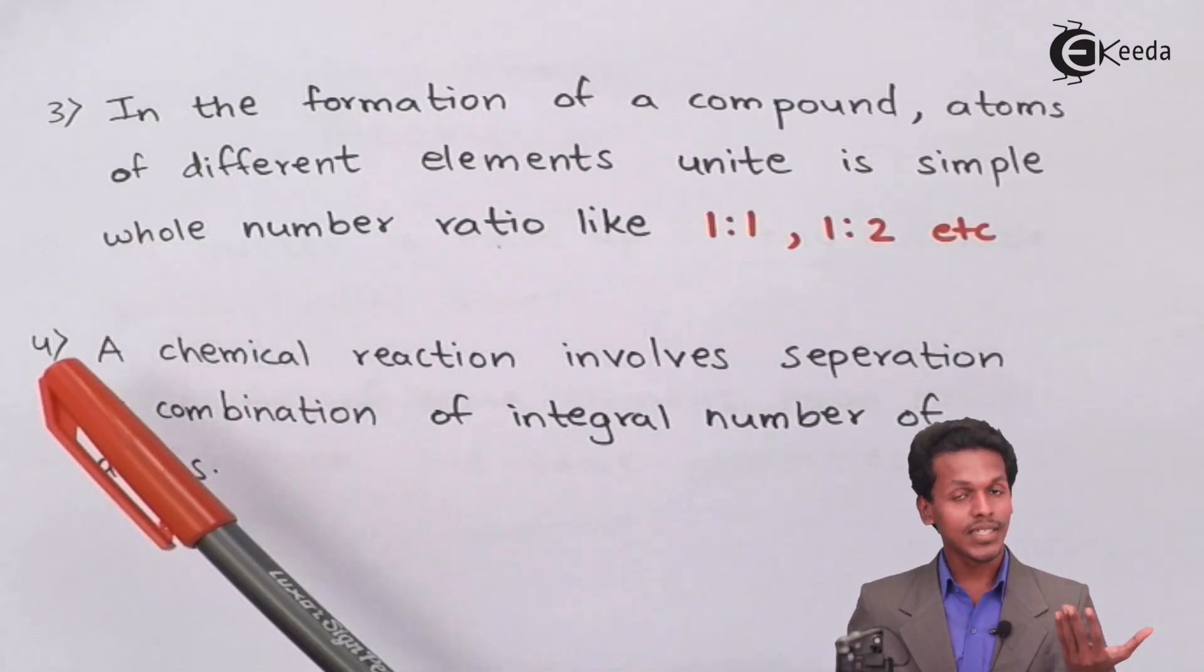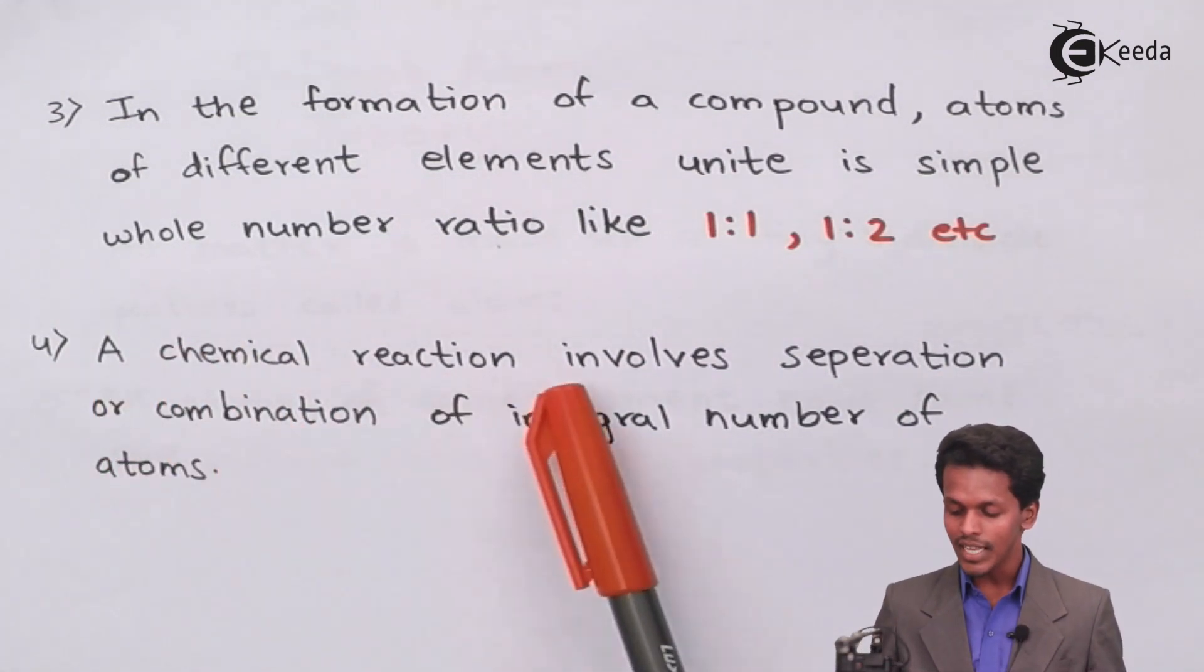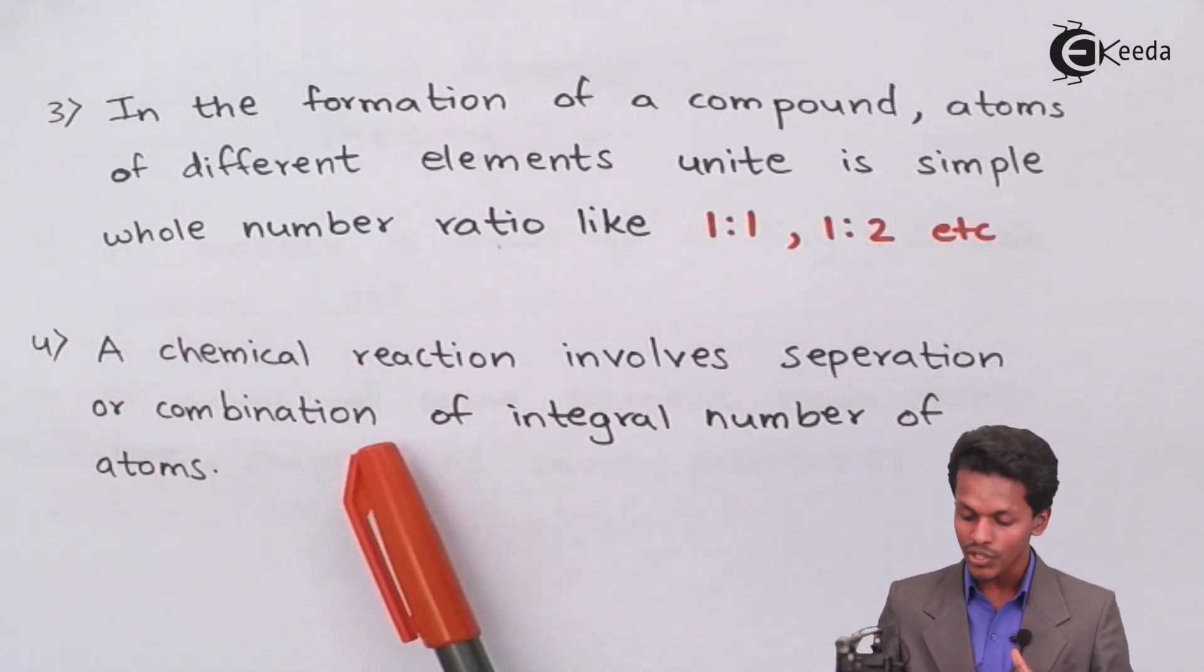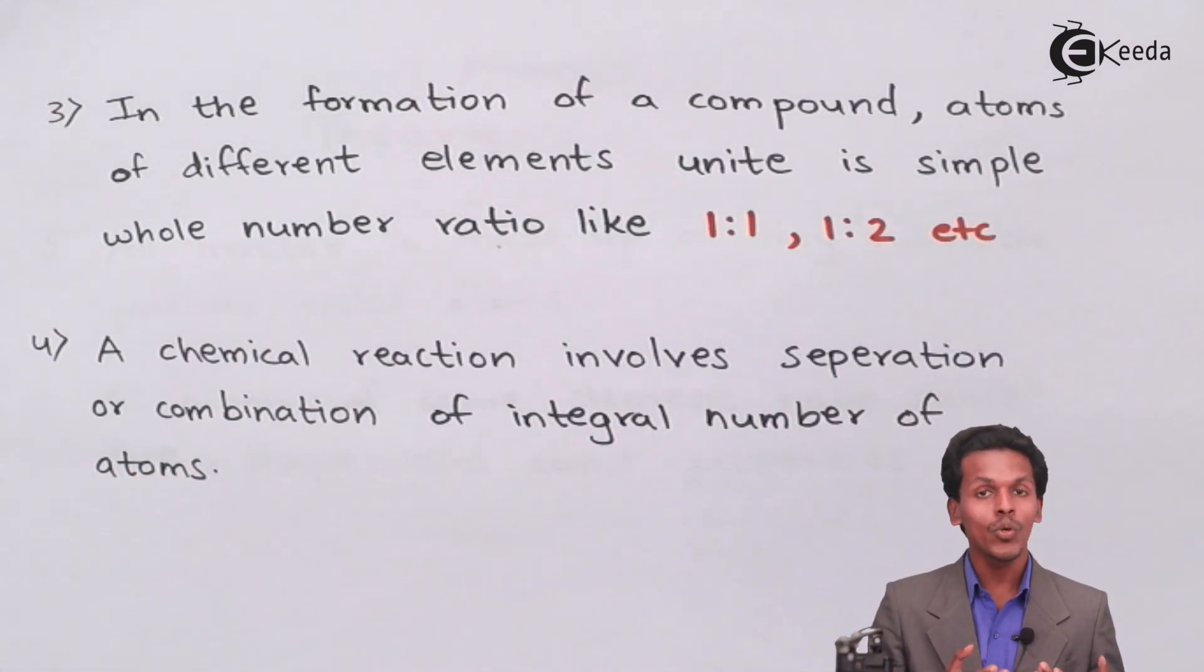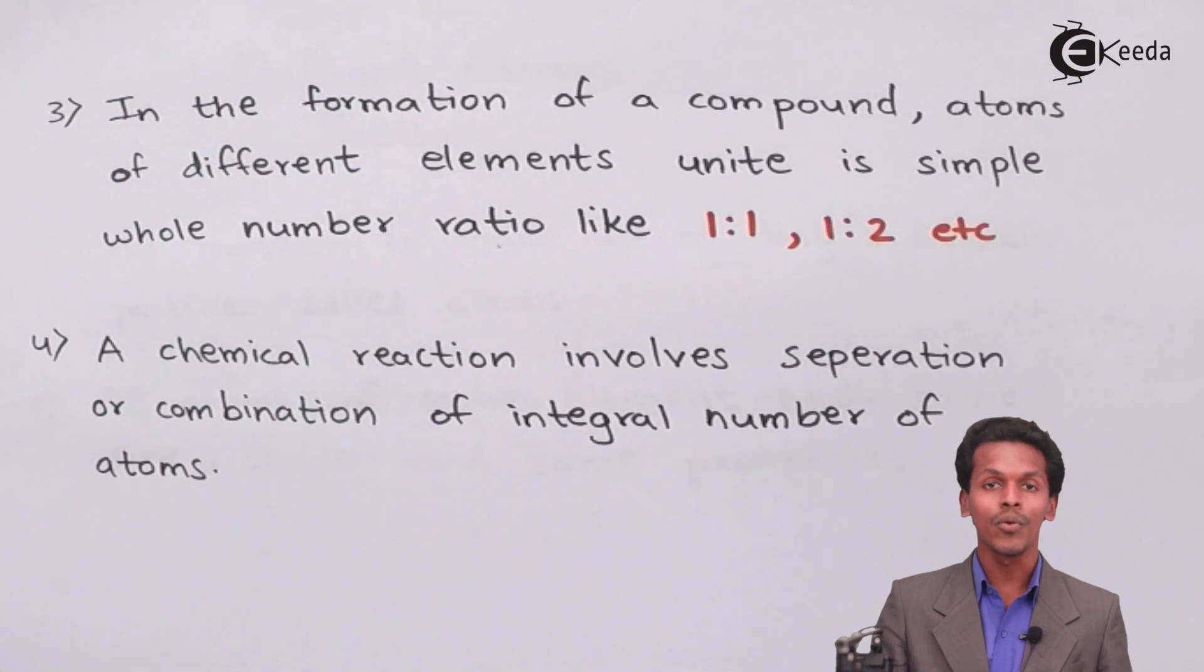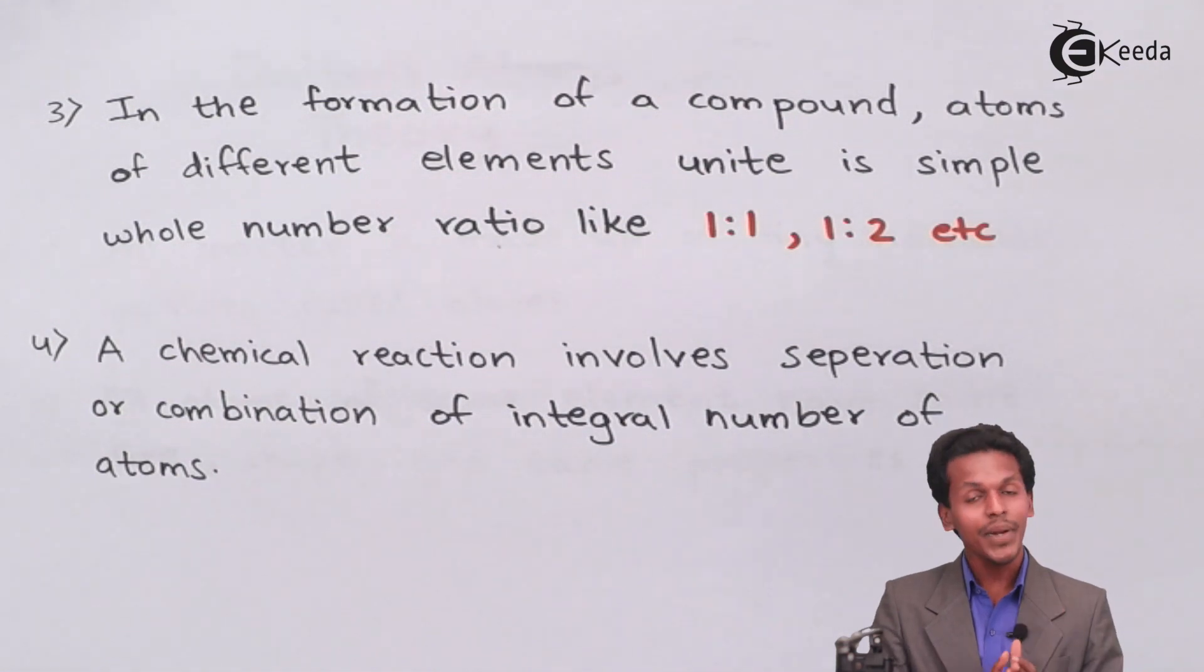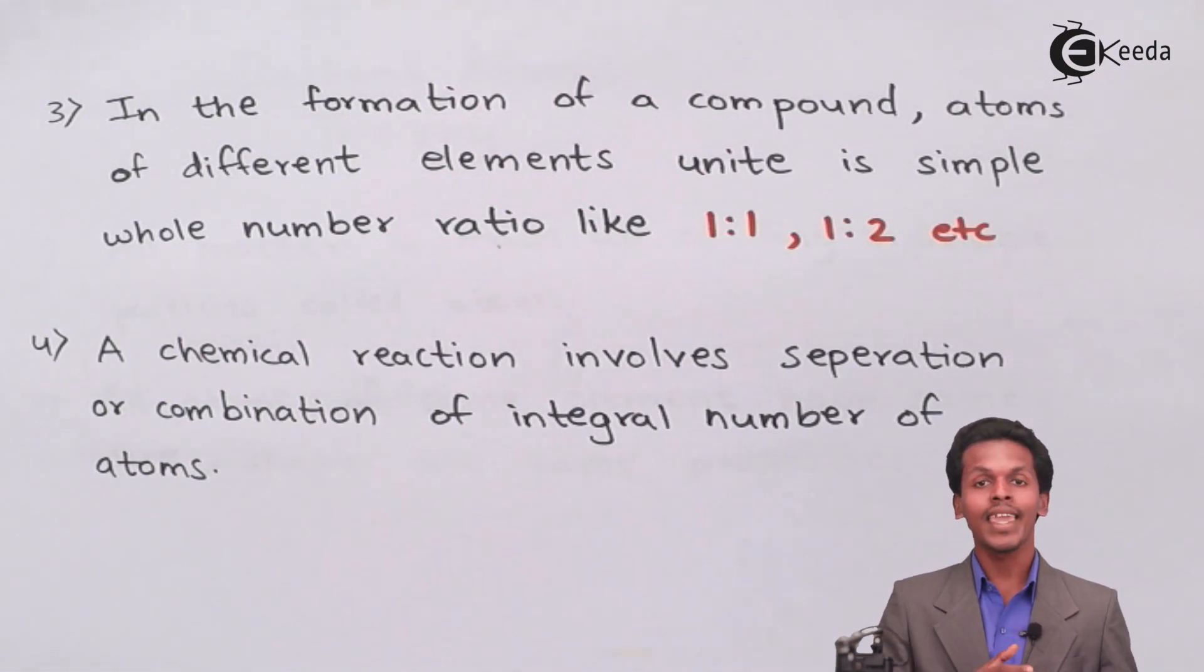Now moving towards the next one: a chemical reaction involves separation or combination of integral number of atoms. During combination of atoms to form a compound, they will form an integral number of atoms, and during decomposition or separation of that compound, this same rule is applicable.